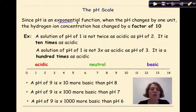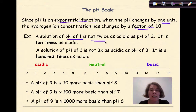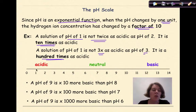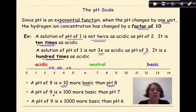Since pH is an exponential function, when the pH changes by 1 unit, the hydrogen ion concentration has changed by a factor of 10 — we are dealing with a base-10 system. So a solution of pH 1 is not twice as acidic as pH 2, it's 10 times as acidic. A solution of pH 1 is not 3 times as acidic as pH 3, it's 100 times as acidic. A pH of 9 is 10 times more basic than a pH of 8, 100 times more basic than a pH of 7, and 1,000 times more basic than a pH of 6. So never say twice something — it's always base 10.